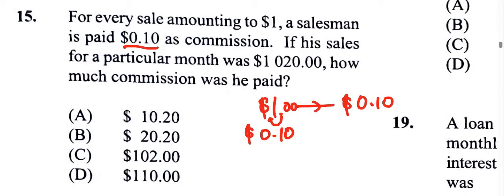Since he's getting 10% for every dollar, we take 10% of the $1,020. We just move the decimal point one place to the left and we get $102. So the answer is C.